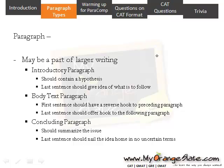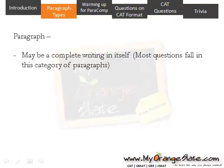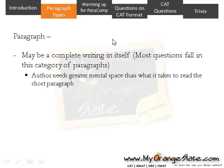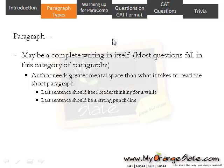More frequently, the paragraphs that appear in the CAT exam are not part of larger writings. They are complete writings in themselves. Most questions fall in this category, where the author has written only so much to convey his or her ideas. If an author writes just 150–200 words on an idea, it would mean that the author would require greater mental space than what it takes to read the short paragraph.